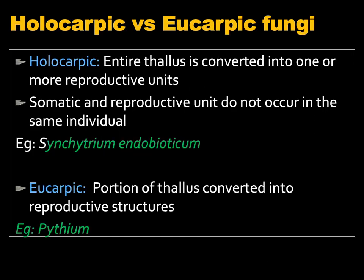Fungi are often considered as holocarpic or eucarpic. Holocarpic means the entire thallus is converted into one or more reproductive units, and the somatic and reproductive functions do not occur in the same individual. A typical example is Synchytrium endobioticum, which is considered a holocarpic fungus — its entire thallus is converted into reproductive units. In eucarpic fungi like Pythium, which belongs to Oomycetes, only a portion of the thallus is converted into reproductive structures, not the entire thallus.